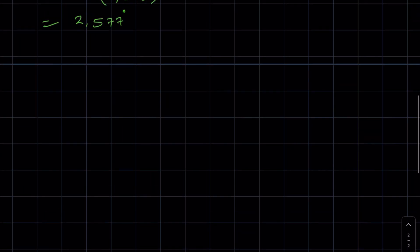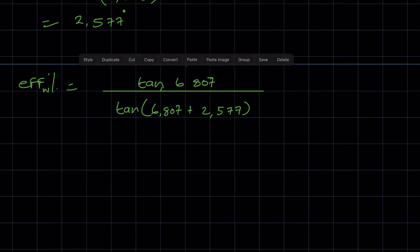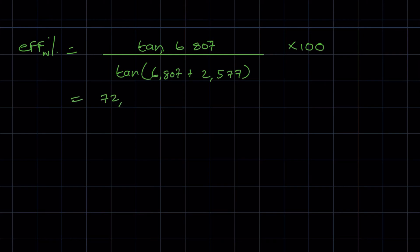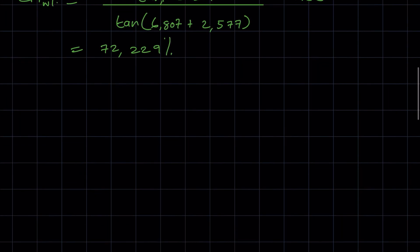Now that we have both angles, we can get the efficiency of the worm. Efficiency = tan(6.807°) divided by tan(6.807° + 2.577°), times 100. Punching this into the calculator gives us 72.229%. That is how we calculate the efficiency of the worm in this case.